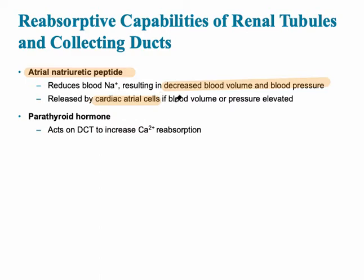The other important hormone is parathyroid hormone, and it acts on the distal convoluted tubule to increase calcium reabsorption.